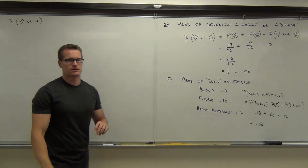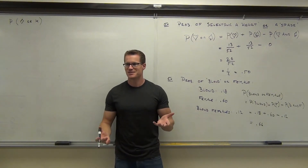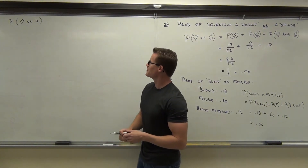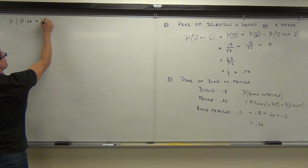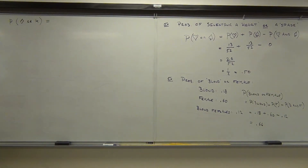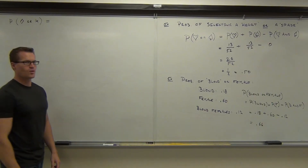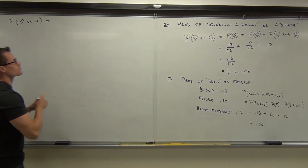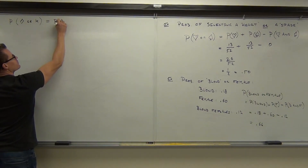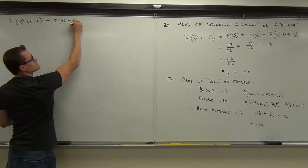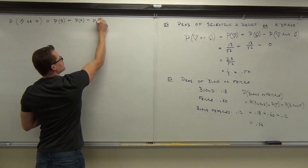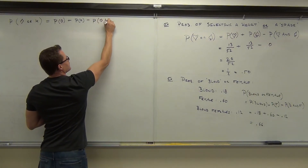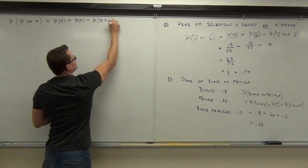A diamond or a king. By the addition rule, what this says is we're going to find the probability of selecting a diamond all by itself, then we're going to add to it the probability of selecting a king all by itself. And then if they could occur together, we're going to subtract the probability of selecting a diamond and a king at the same time.